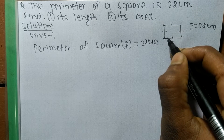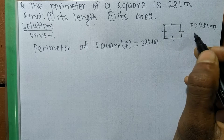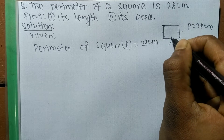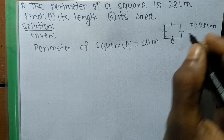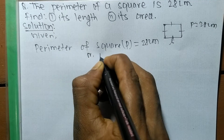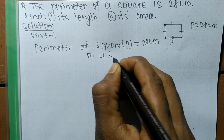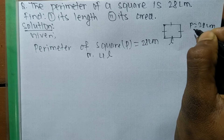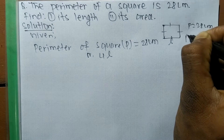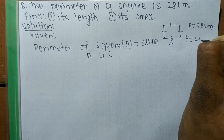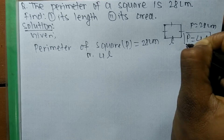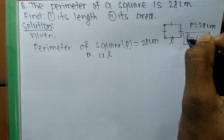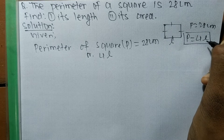A square contains four sides and all sides are equal. We denote one side by L. Then its perimeter becomes 4L, where L is the length of each side. So the formula to calculate the perimeter of a square is P = 4L, where P is the perimeter and L is the length of each side.